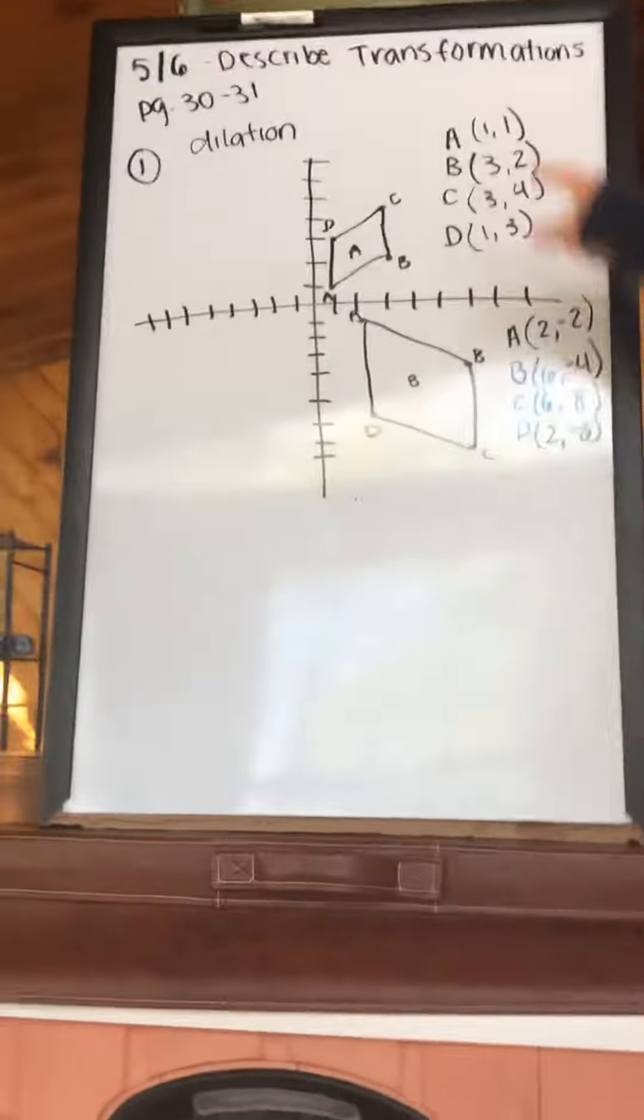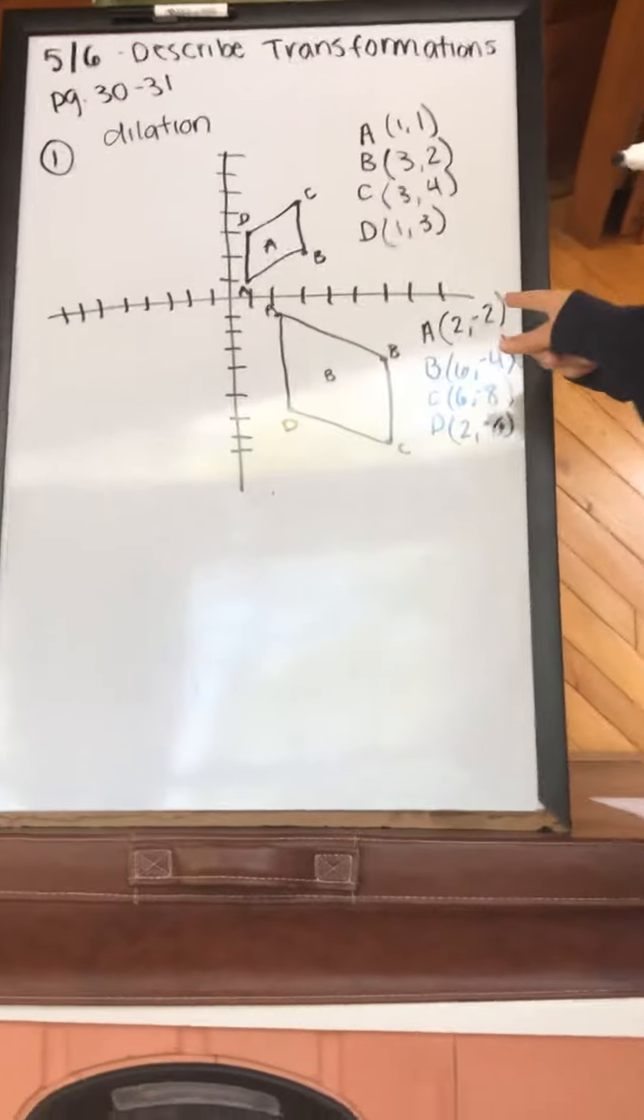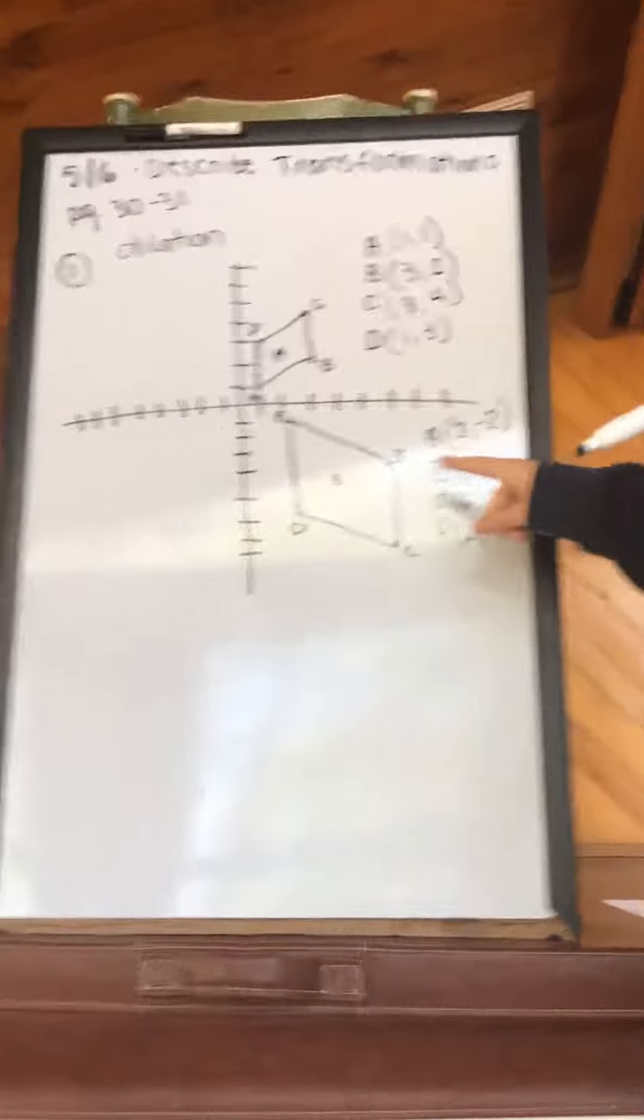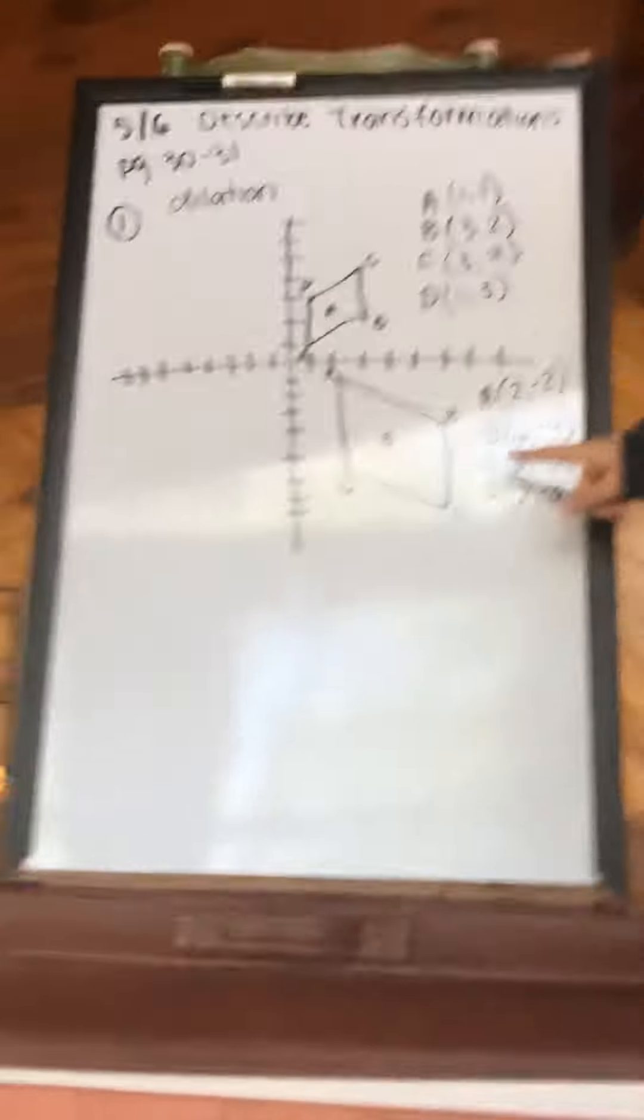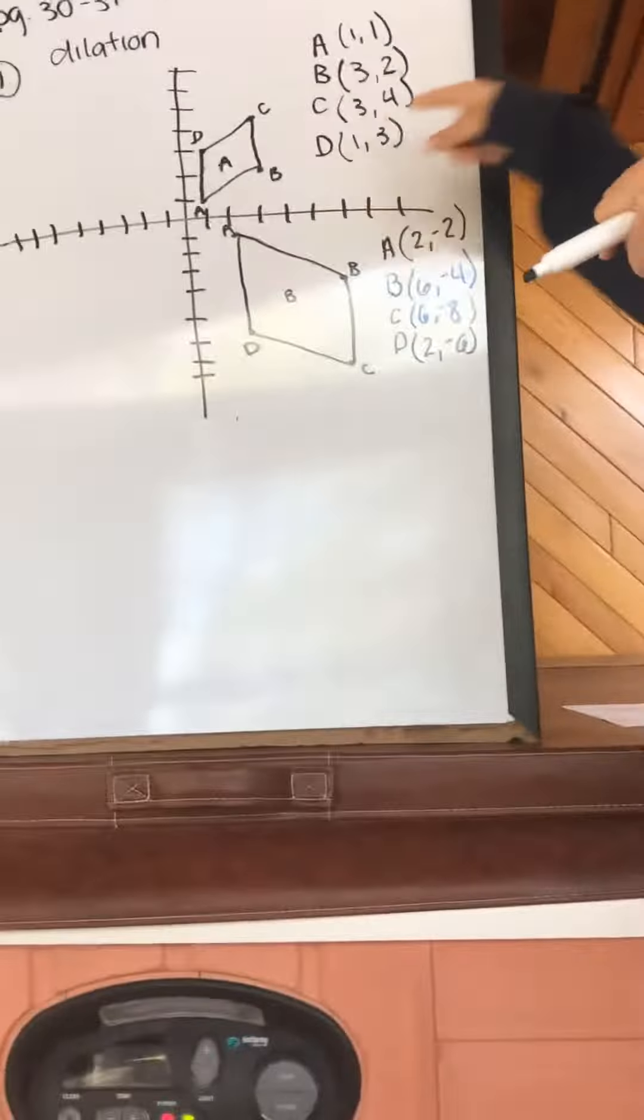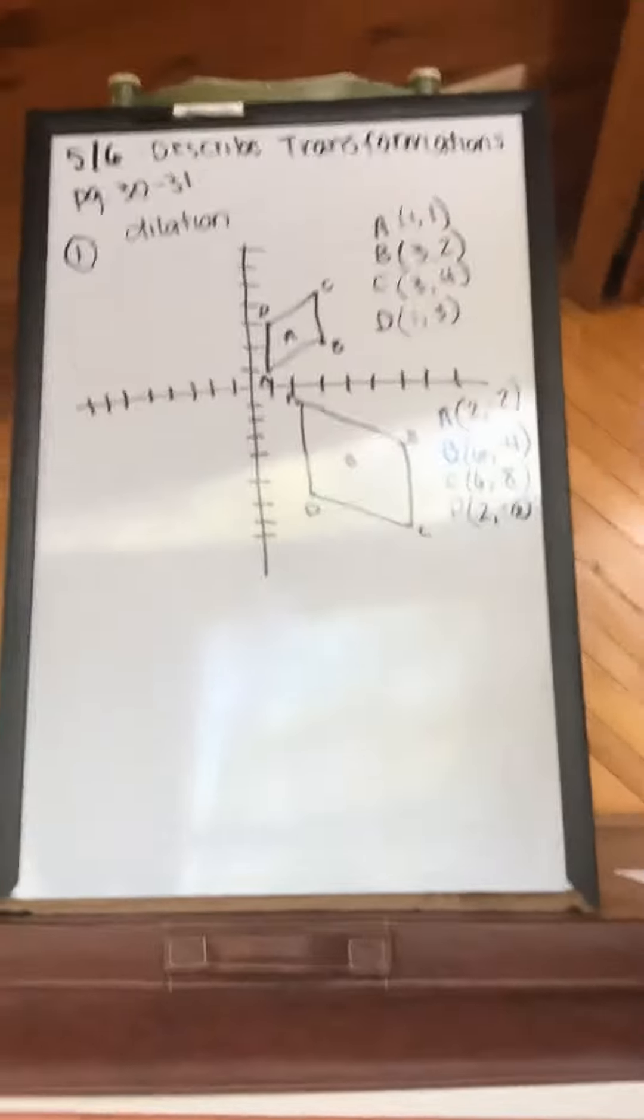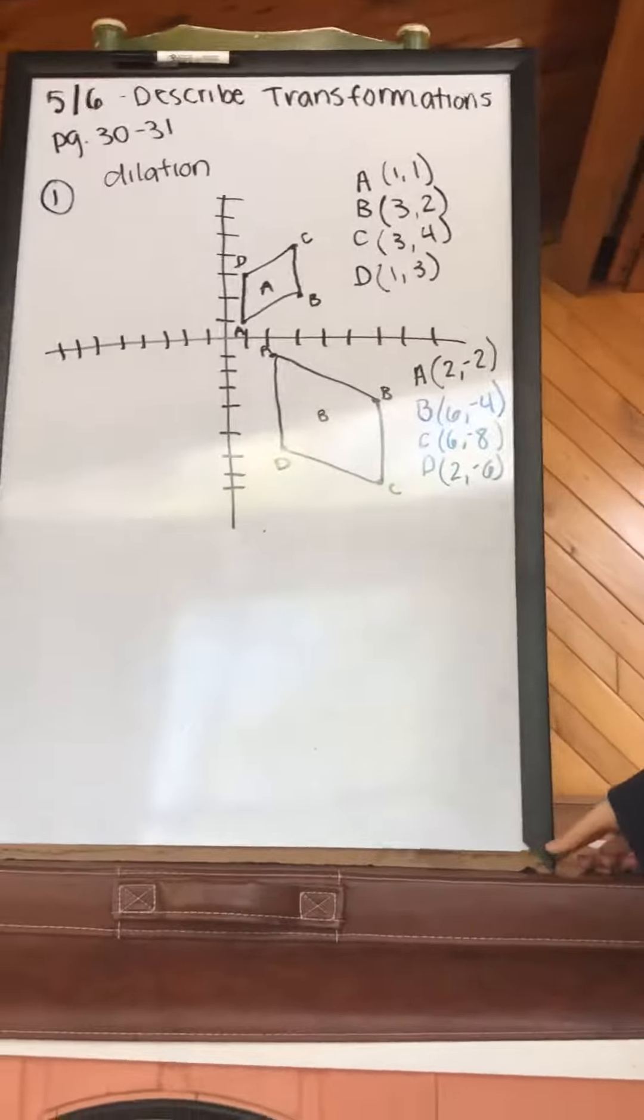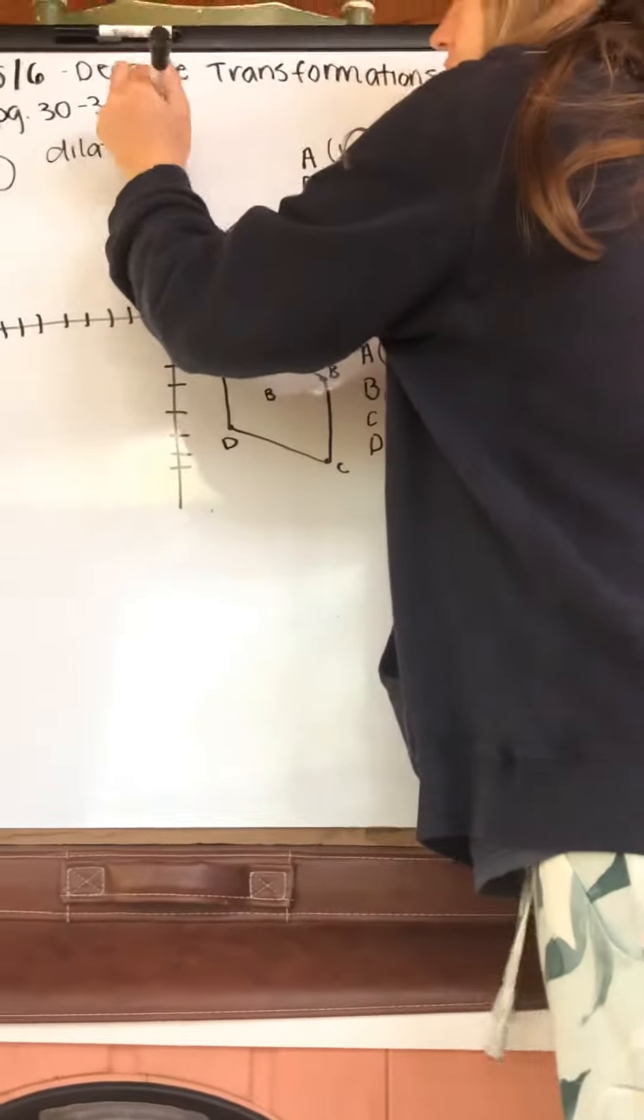If we go from (1,1) to (2,2), we're going from 1 to 2. B is going from (3,2) to (6,4), C is going from (3,4) to (6,8), D is going from (1,3) to (2,8). We are doubling the size of this figure. So we're dilating it by a scale factor of 2.